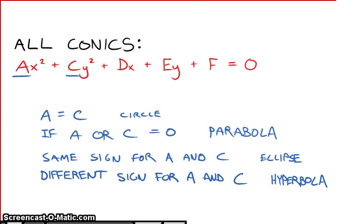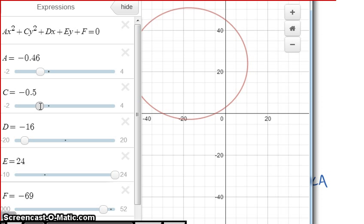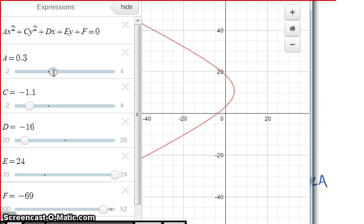Let's take a look at this real quick. Back to the graph, A and C are the same, we have a circle. A and C are both positive, we have an ellipse. C is positive but A is negative, we have a hyperbola. We could make this negative also, we go back to having an ellipse. And if C is negative and A is positive, we get a hyperbola.